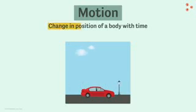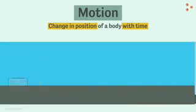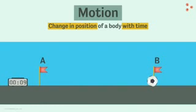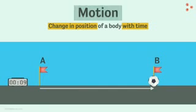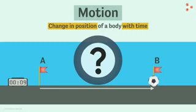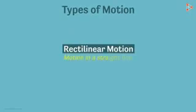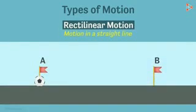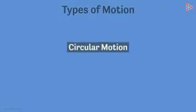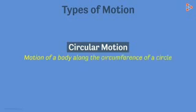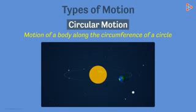For example, when an object moves from point A to point B, the object is changing its position. We can see that time is also changing with position, so it is undergoing motion. Change in position of a body with time is motion. Now we can move on to types of motion. The simplest of all is rectilinear motion — motion in a straight line. If an object is moving from point A to point B in a straight line, it is an example of rectilinear motion. Next we have circular motion — if an object is moving along the circumference of a circle, it is called circular motion. Example: the motion of Earth around the Sun.